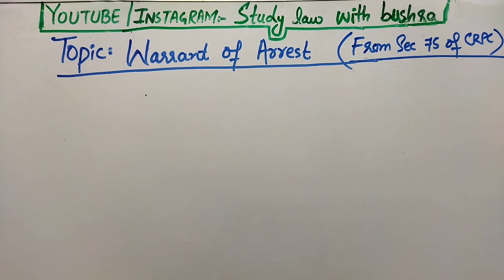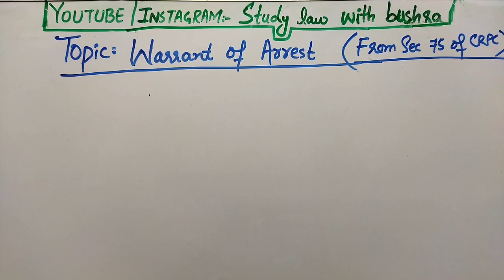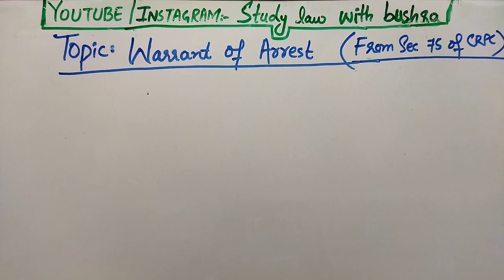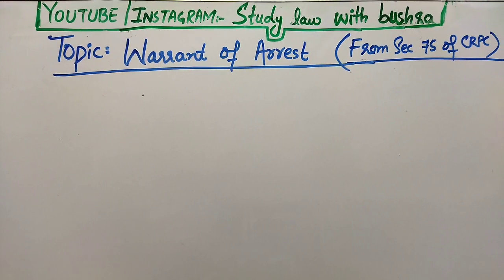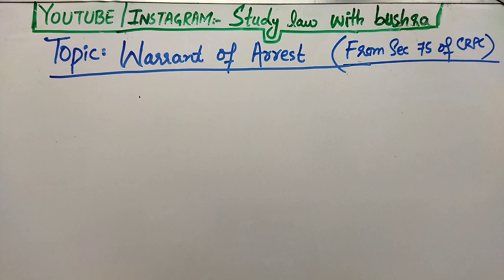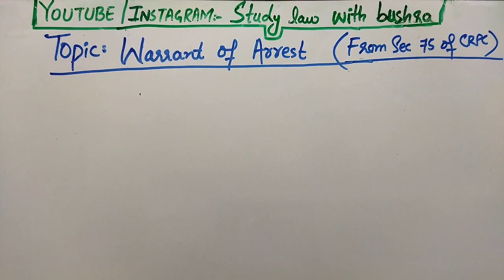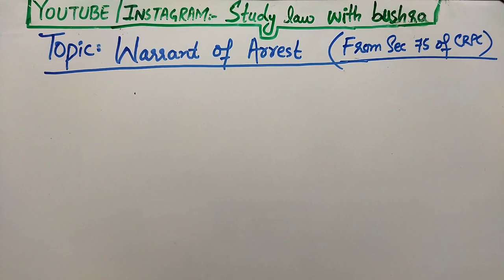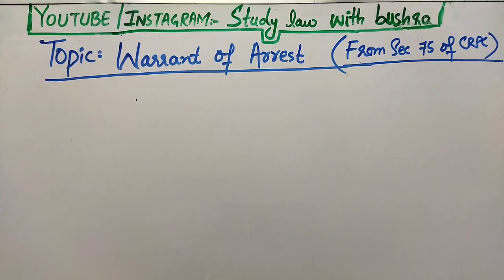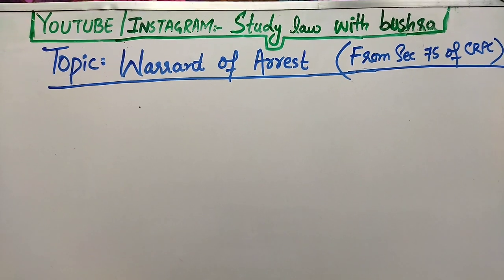Assalamu alaikum viewers and welcome to my channel Study Law with Bushra. So we were discussing chapter 6 of CRPC. In the previous video we discussed the first process, that was summons to appear. In today's video we are going to discuss the Warrant of Arrest from section 75 of CRPC.